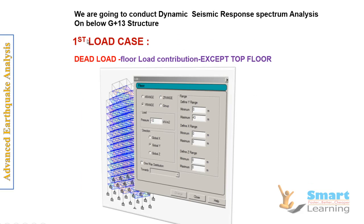The first load case will be the dead load, which is 12 kN between 0 to 43 meters — that means except the top floor, from the ground up to below the top floor at 43 feet. For that we'll be applying 12 kN per meter square of dead load, which is the floor load contribution except the top floor.